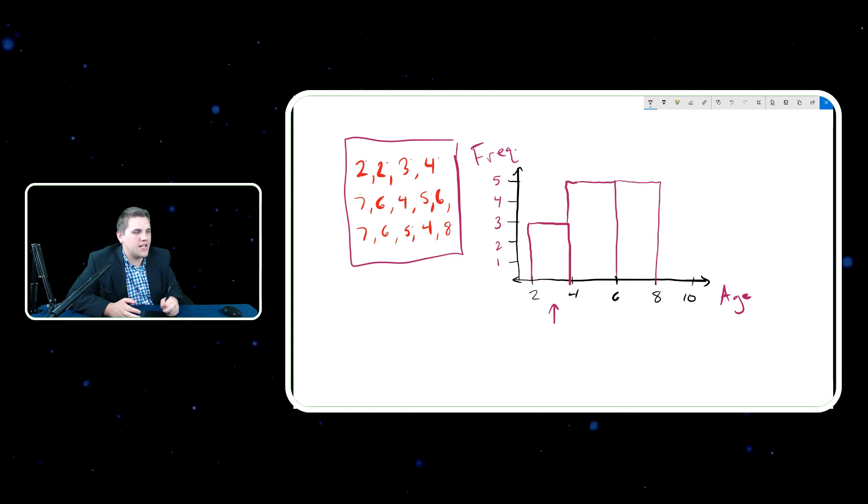And then eights, nines, and not tens, because tens would go into the next bin. It looks like we only have one eight. So it would be something like this.